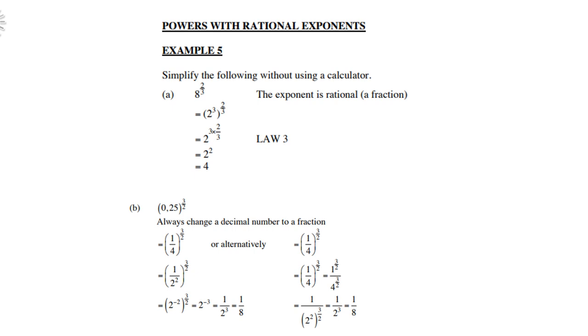Look at the second example, a decimal 0.25. We are going to change this into a common fraction. Remember how to do it. So it's 25 over 100 because there are two digits after the decimal comma. So that gives you 100. So 25 over 100 is a quarter.